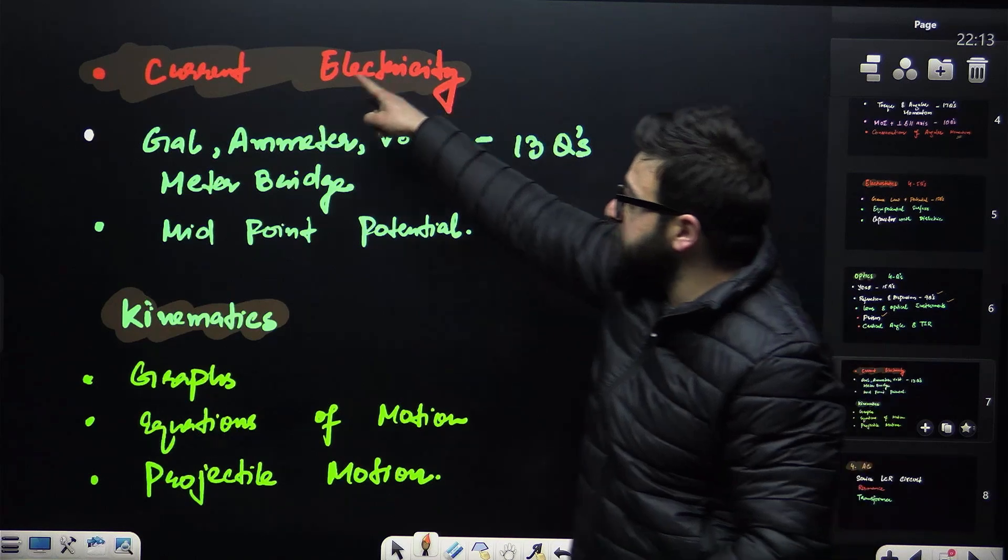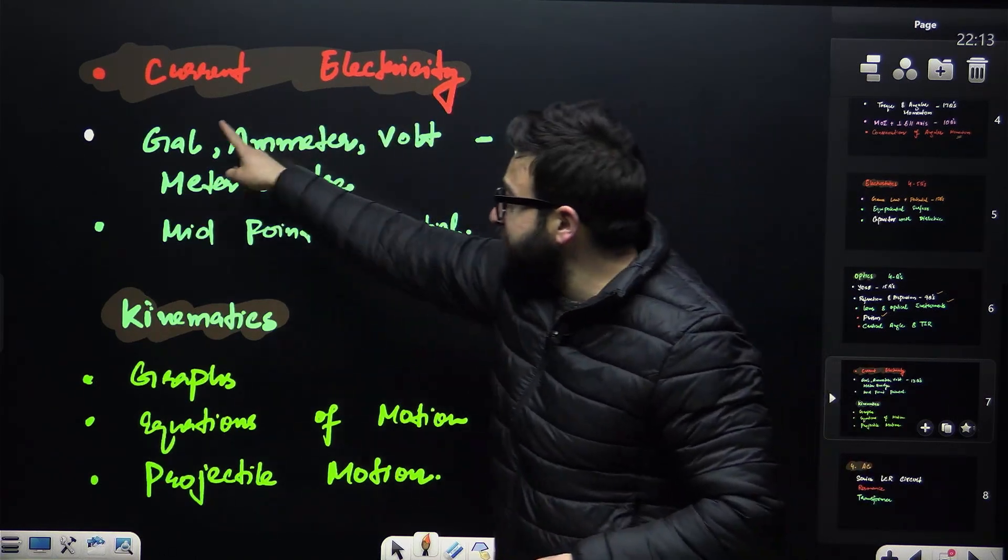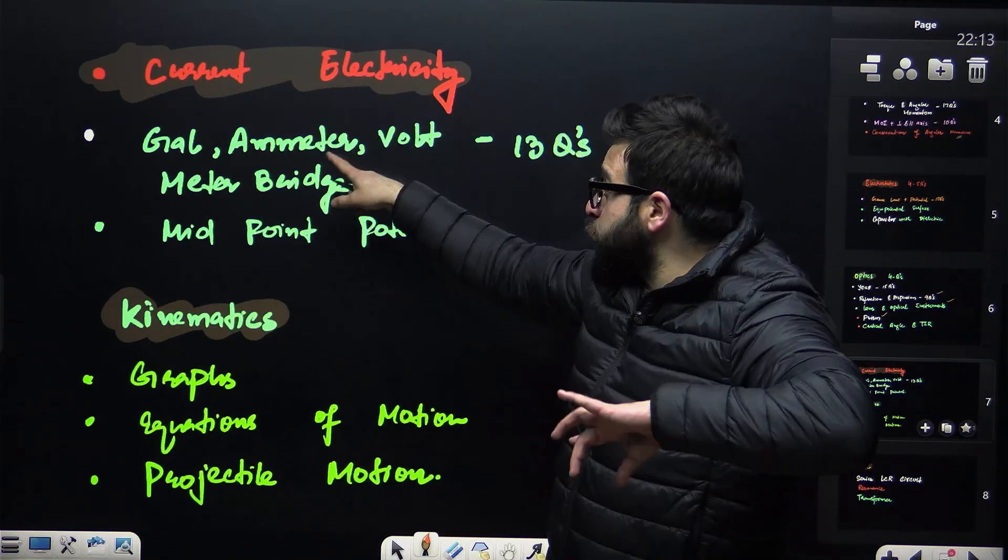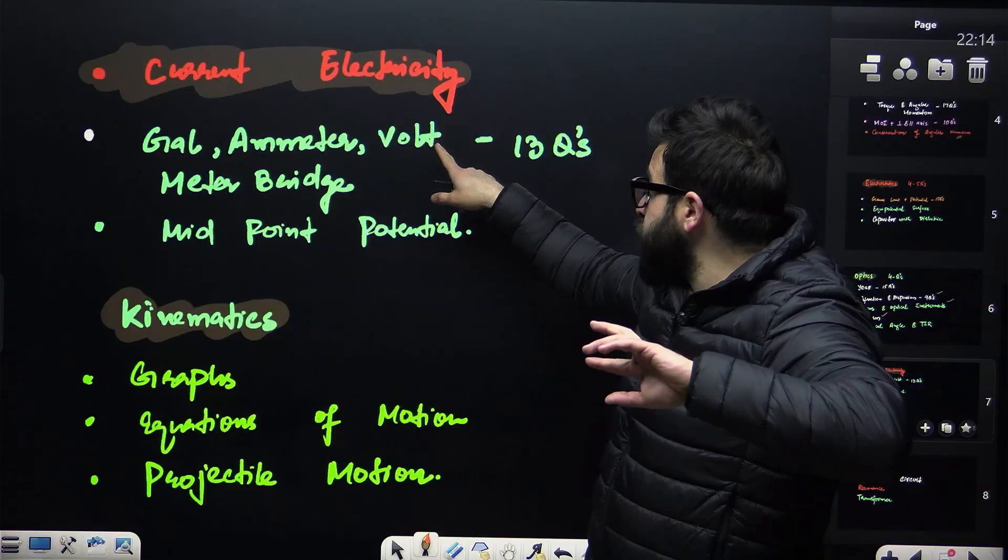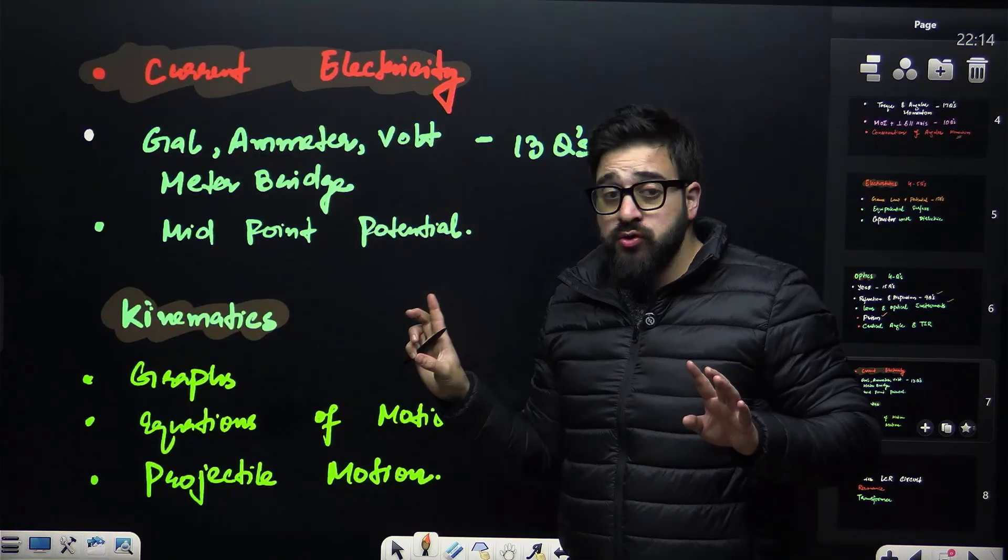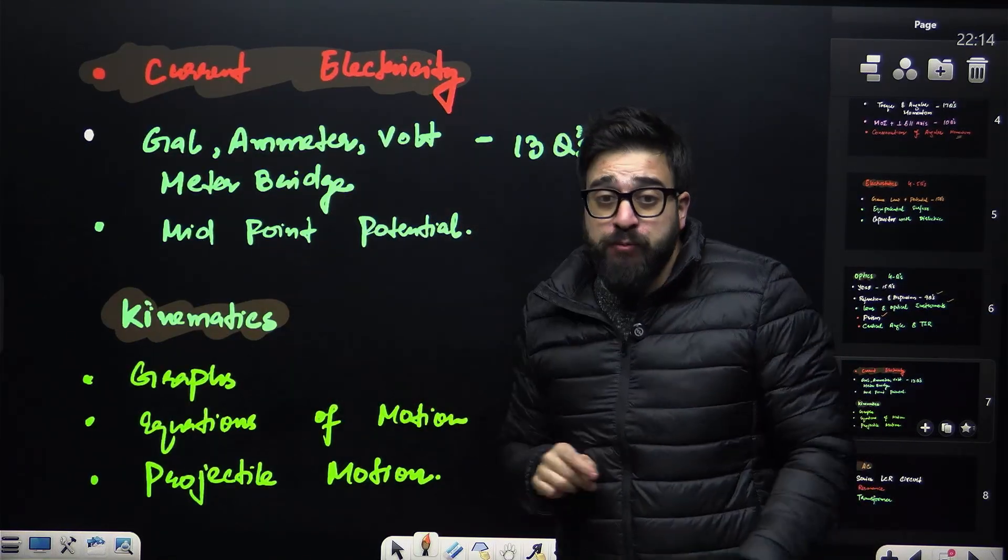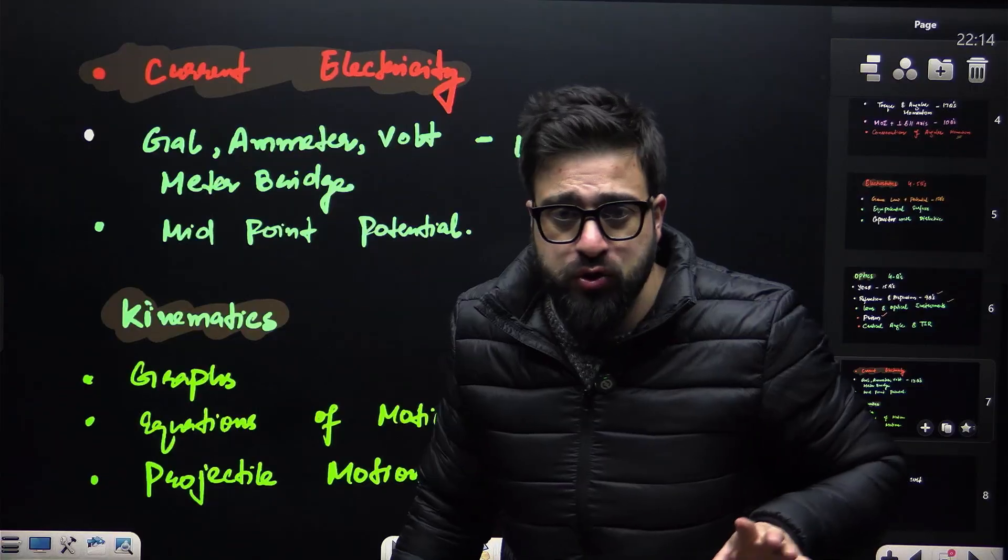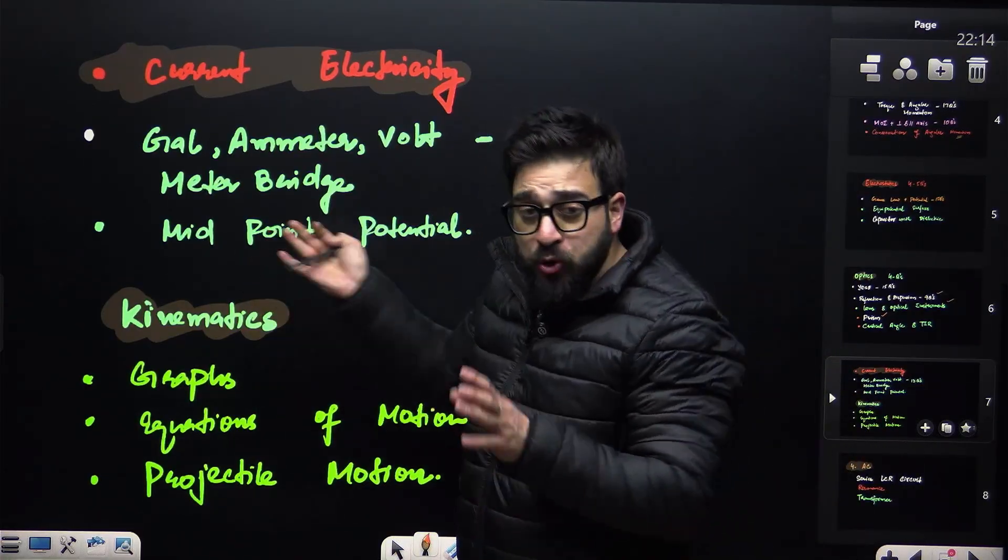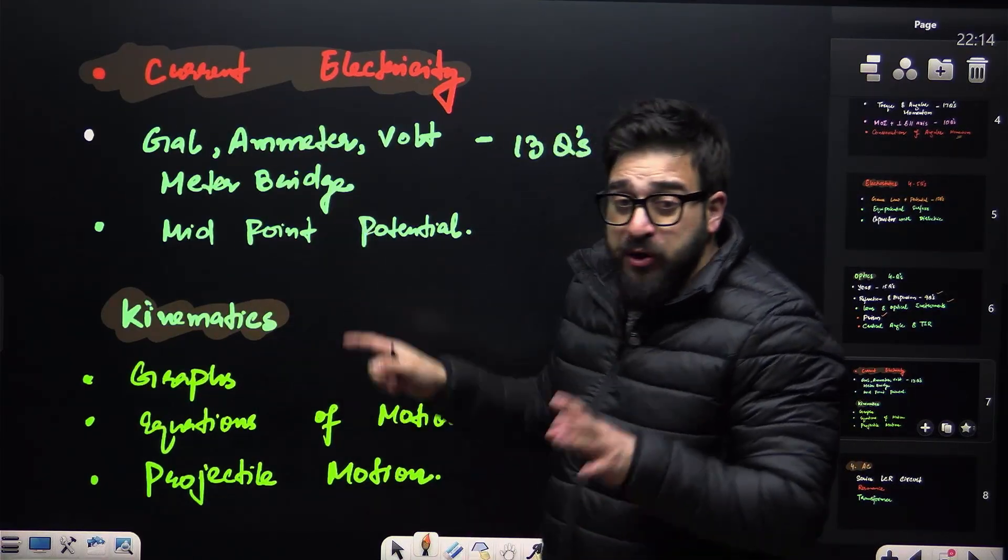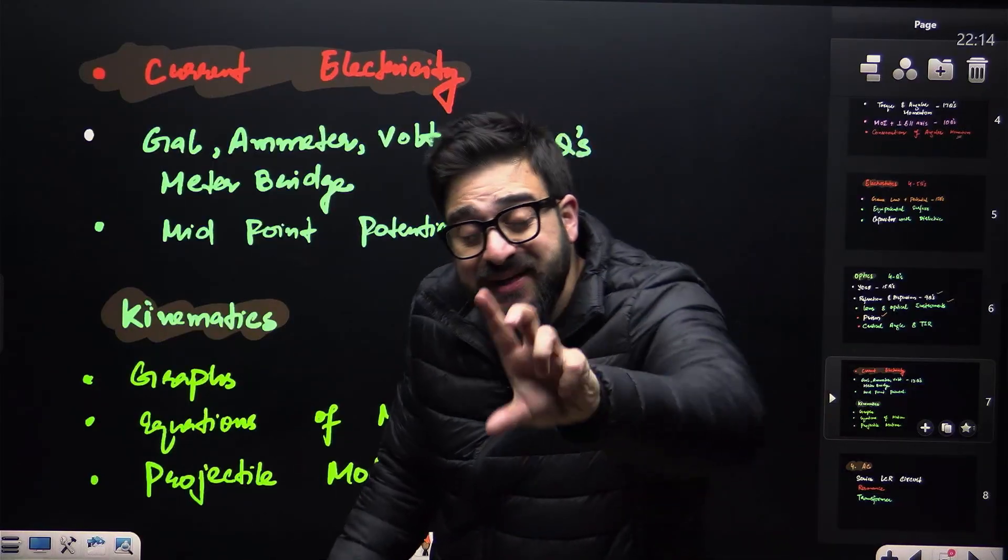And then, my dear NEET aspirants, we say current electricity - galvanometer conversion of galvanometer to ammeter, conversion of galvanometer to voltmeter, 13 questions. And meter bridge also. And please try to look at the midpoint potential at that drift velocity portion also. Okay, drift velocity portion, midpoint potential also, because this midpoint potential will help you to find the current in different different resistors and potential at the points also.